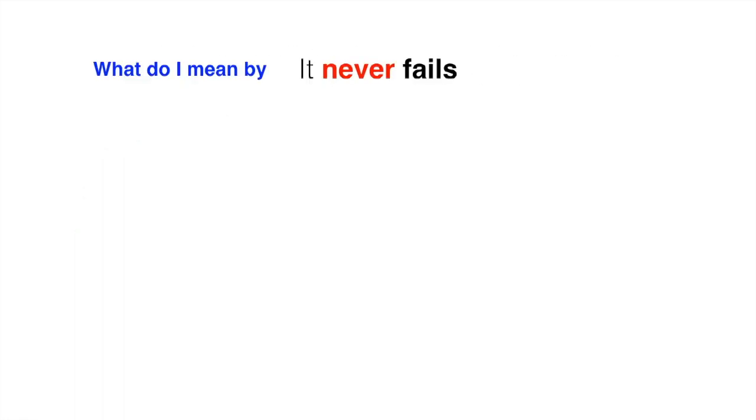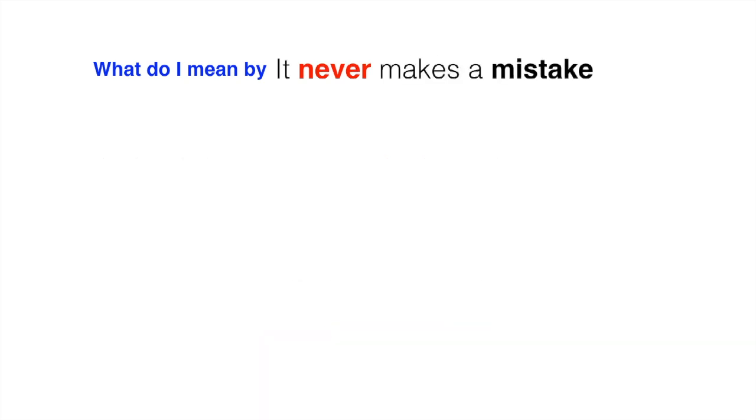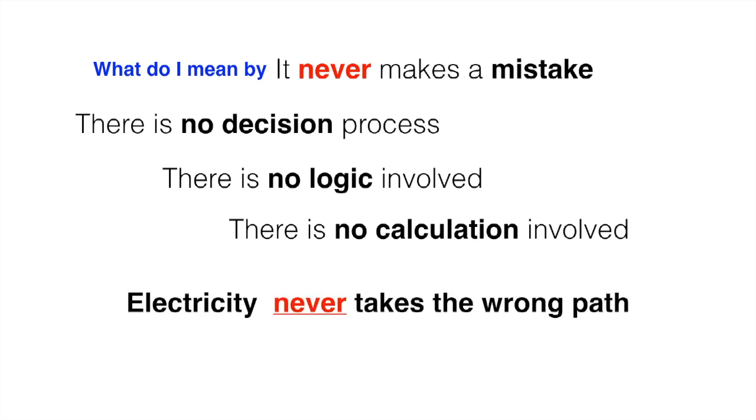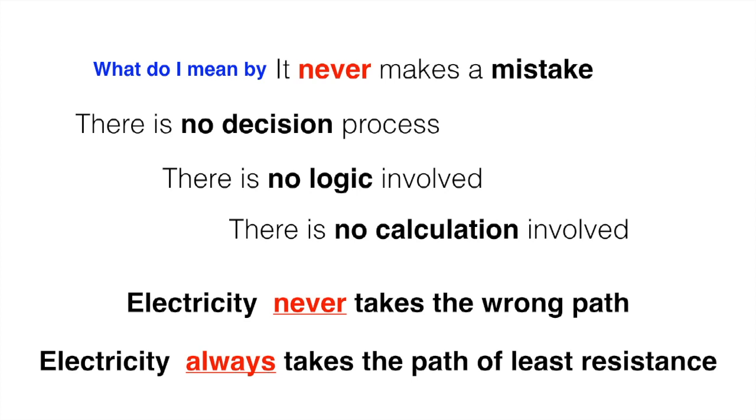So what do I mean by it never fails? If electricity is given a conductive path to ground, it will take it every time, period. Now what do I mean by that it never makes a mistake? There is no decision process involved. There is no logic. There is no calculation. Electricity never takes the wrong path. It always takes the path of least resistance.